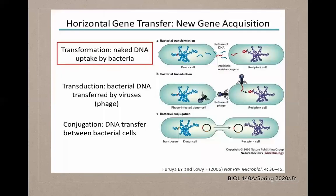A diagram illustrates bacterial transformation, transduction, and conjugation. In transduction a phage is present; in conjugation a pilus is utilized; and in transformation, DNA is taken up by the bacterial genome — in this case through a plasmid inserted into the bacterial cell.